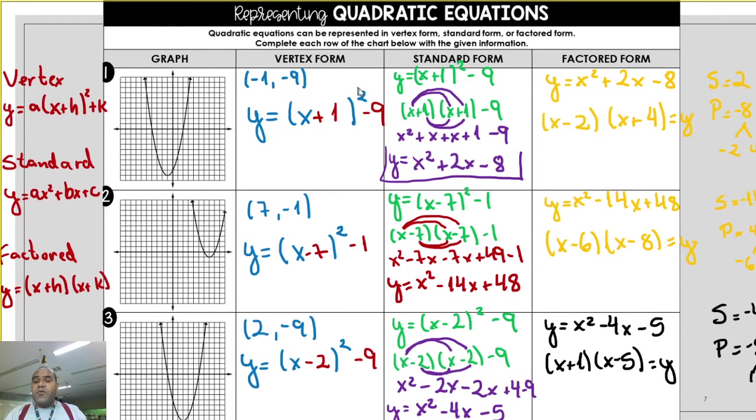And here, the standard form. We use the vertex form, solve for y. Great. And we got the vertex form. And the factor form, we use the standard form, and find the factors. Great. Using the sum and product method, or any other, you are working on it.